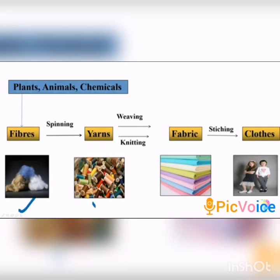What is the source of fiber? Fibers are obtained from plants, animals, and also by using chemicals. For example, plant fibers are cotton and jute; animal fibers are wool and silk; synthetic fibers are nylon, polyester, and acrylic. Even coir — coconut fiber — is also a fiber; it is used to make rope or mattress.